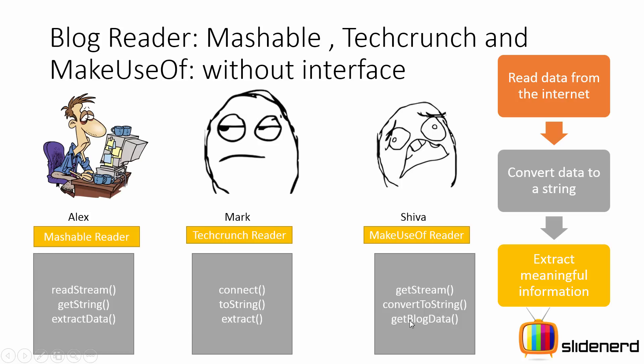The problem with this approach is we don't have a contract where people have to agree to keep certain method names or do certain things the way you want. When Alex, Mark, and Shiva give me the final code, I'm going to be confused because there are nine method names I need to remember and figure out what exactly each method does. This was the problem without using interfaces.